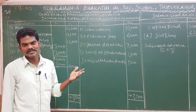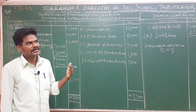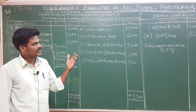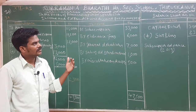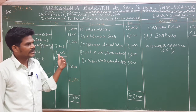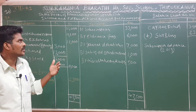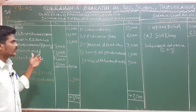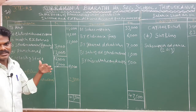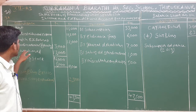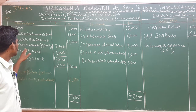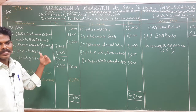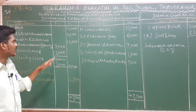Sports material consumed is treated like stationery or medicines — we apply the formula: opening stock plus purchases minus closing stock equals amount consumed. So: opening stock add purchases, then subtract closing stock to arrive at the consumed figure for the income and expenditure account.